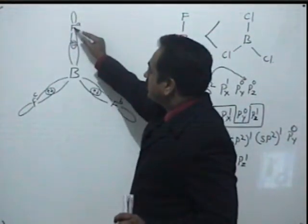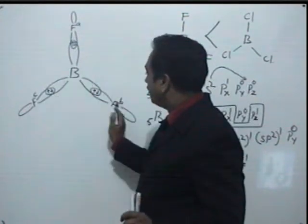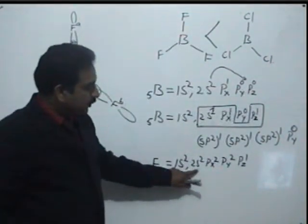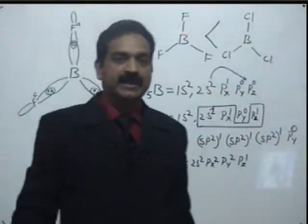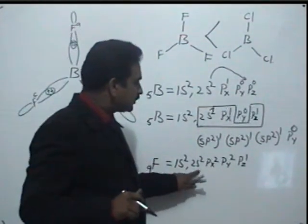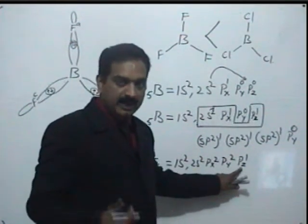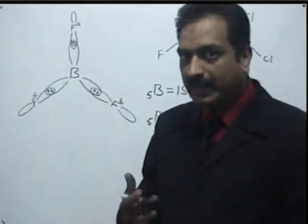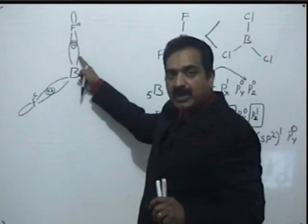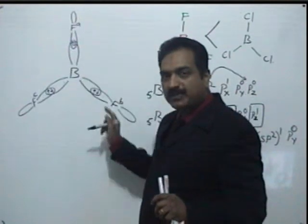For fluorine, the configuration is 1s2, 2s2, 2px2, 2py2, 2pz1. The atomic number of fluorine is 9. Fluorine has one half-filled pz orbital which can take part in bond formation. This pz orbital of fluorine overlaps with the sp2 hybrid orbital of boron to give an sp2-pz type of bond. So all three B–F bonds are sp2-pz type bonds.